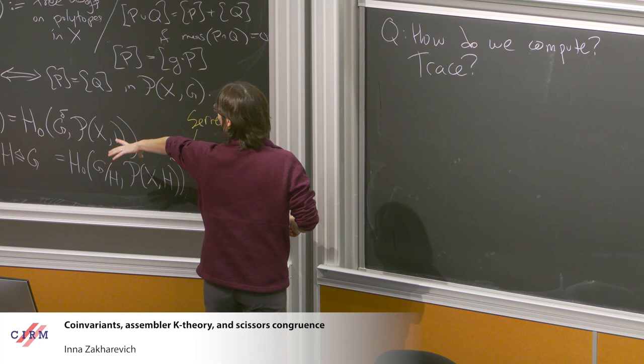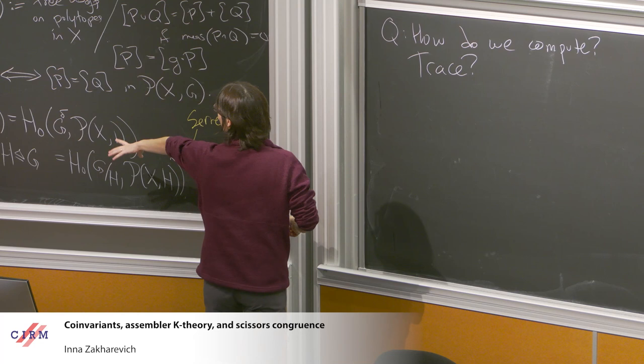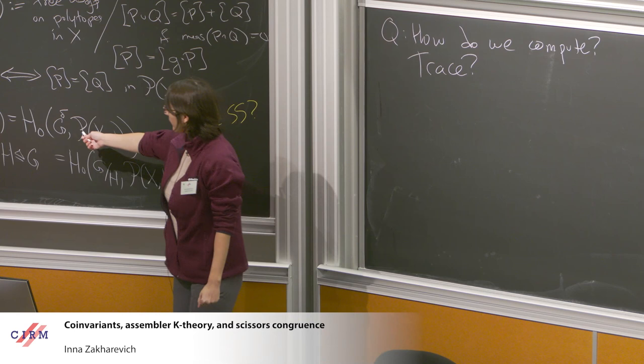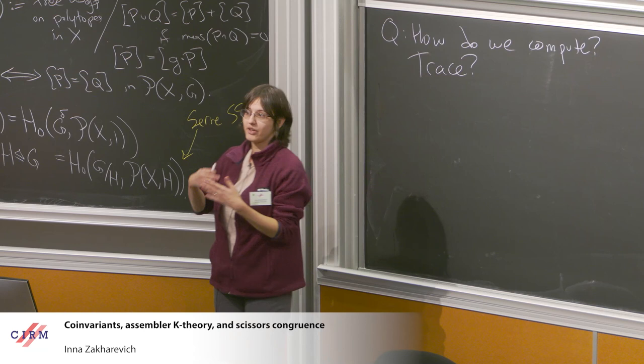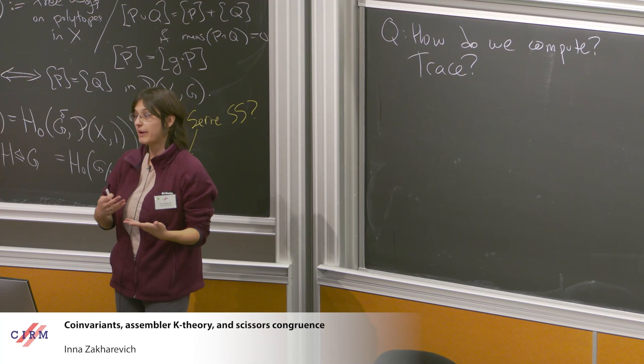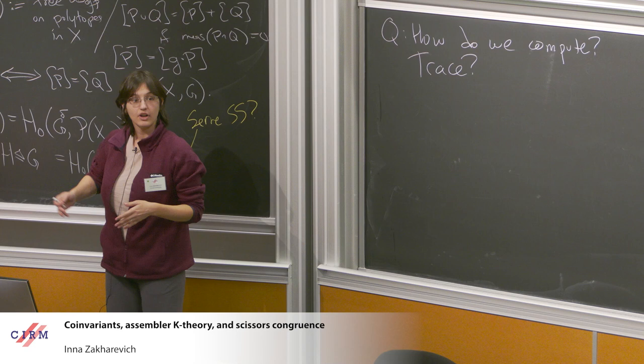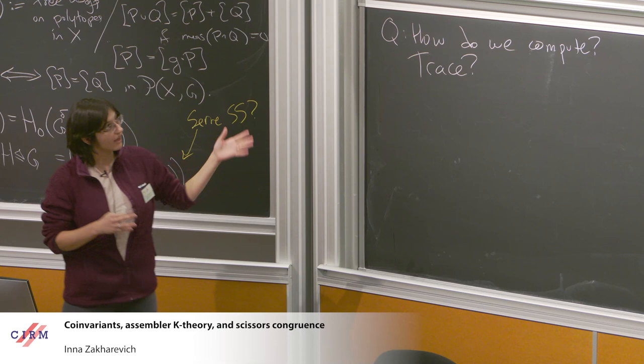When we moved to the perspective where P(X,G) is the co-invariants of G, we noticed G acts on P(X,1). We have the same notion in K-theory: if G acts on something with a K-theory, you get a group action on the K-theory spectrum. So we can ask: if we take the group G in the assembler to be trivial — only allowing cuts, not moves — G acts on the spectrum of K of P(X,1). What's the relationship between K of P(X,G) and the co-invariants of this action?